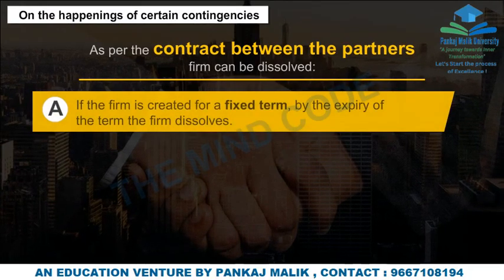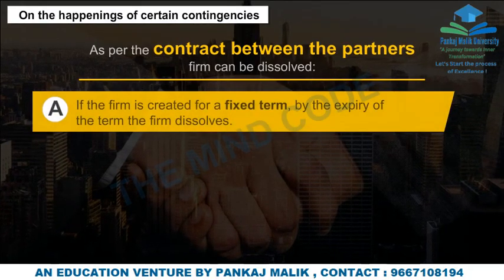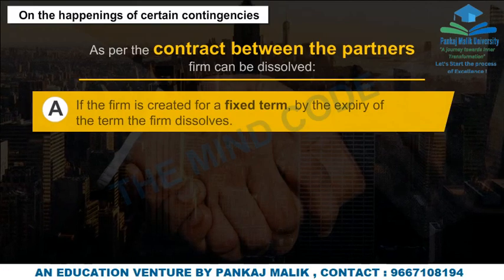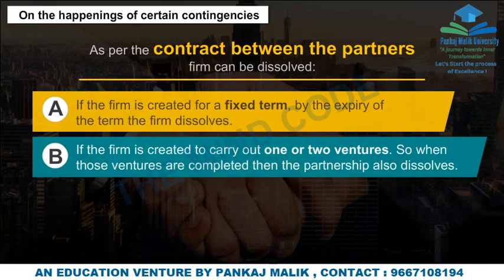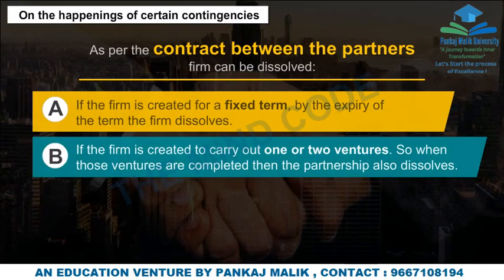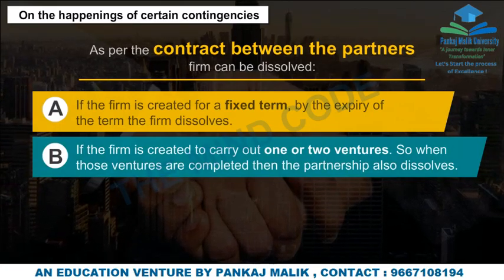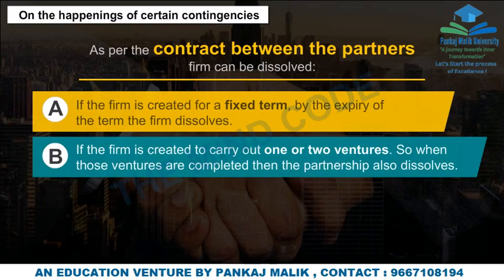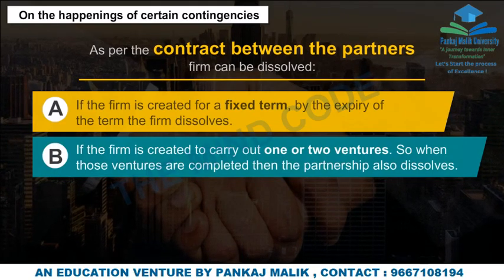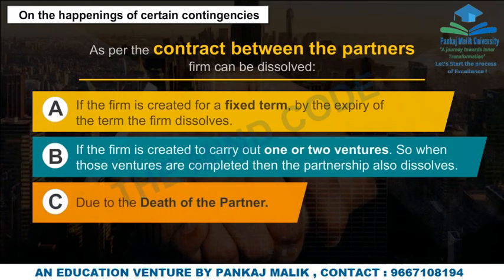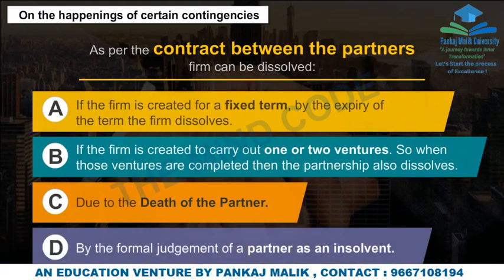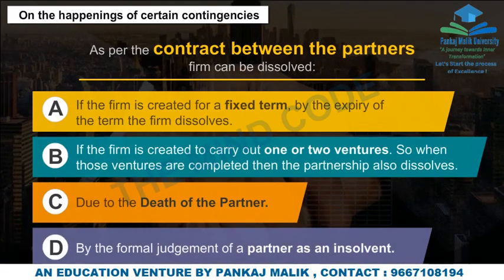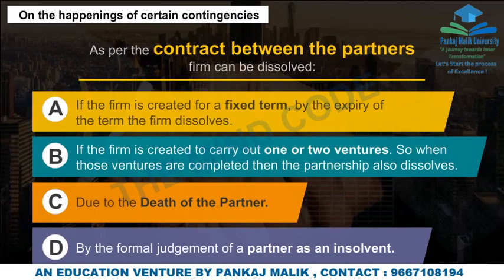Dissolution on the occurrence of certain contingencies: If the firm is created for a fixed term, by the expiry of the term the firm dissolves. If the firm is created to carry out one or more ventures, so when those ventures are completed, the partnership also dissolves. Additionally, dissolution may occur due to the death of a partner, or by the formal judgment of a partner as an insolvent.